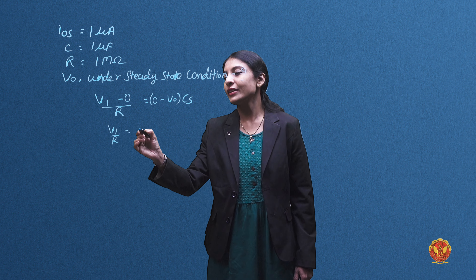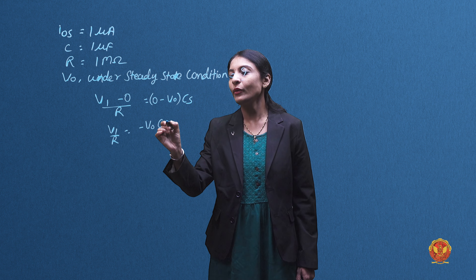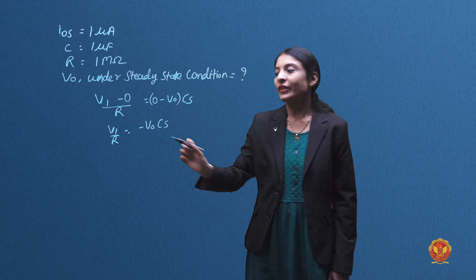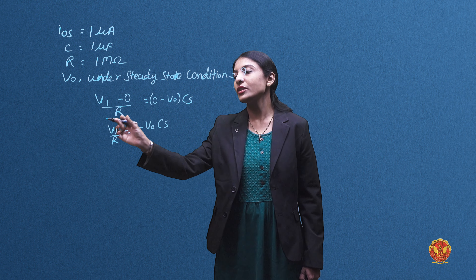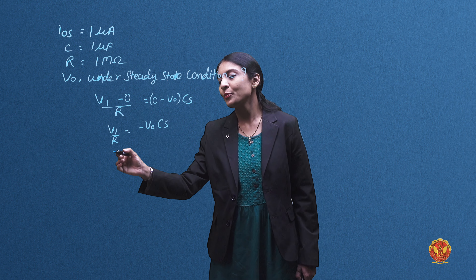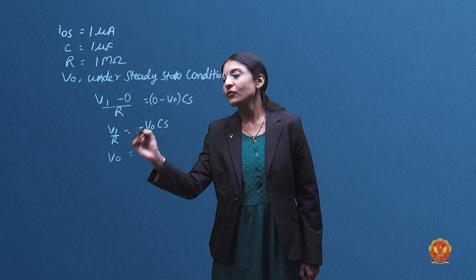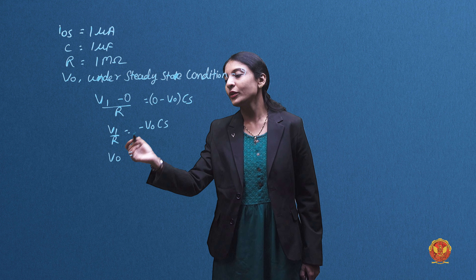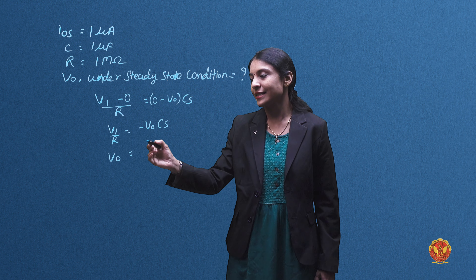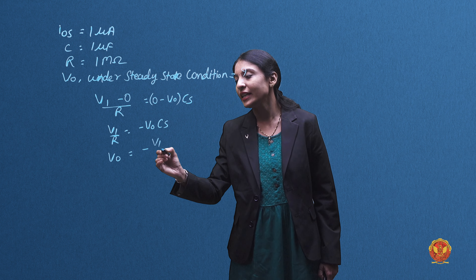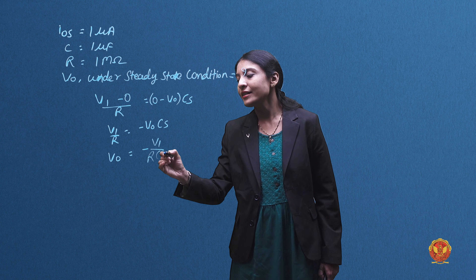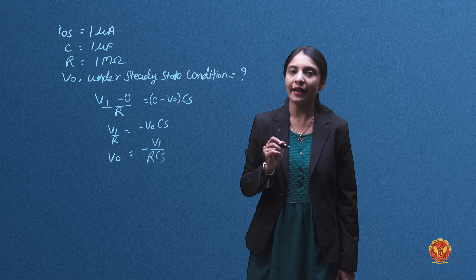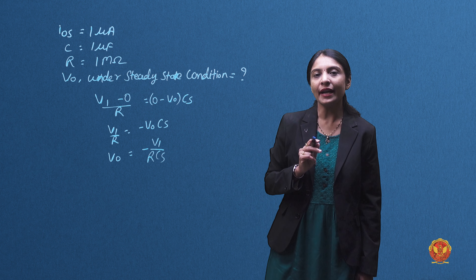We applied KVL at the inverting terminal of op-amp 741 IC. If we calculate the output voltage from this, it becomes: V1 divided by R is equal to minus VO into Cs. Rearranging, we bring the output voltage term to one side, giving us V1 divided by RCs in the negative form.